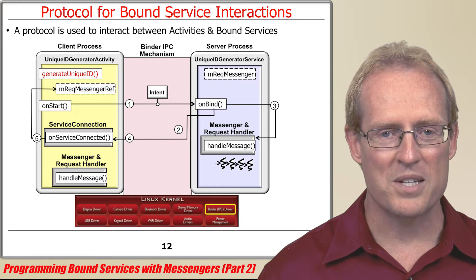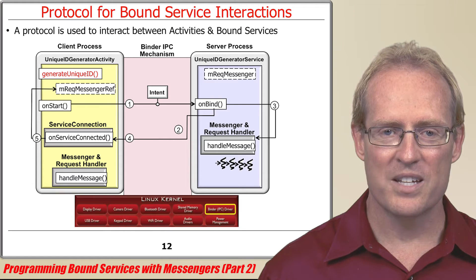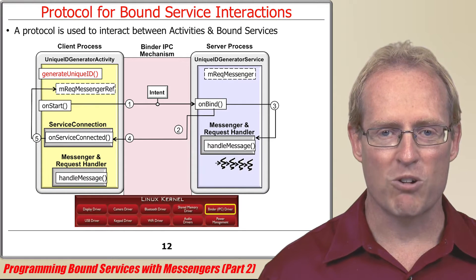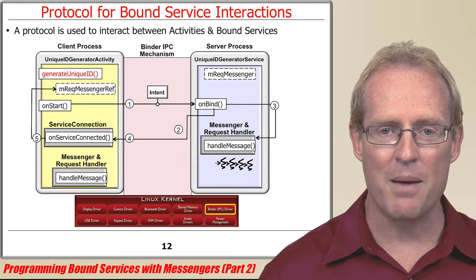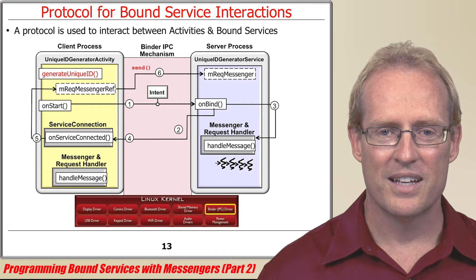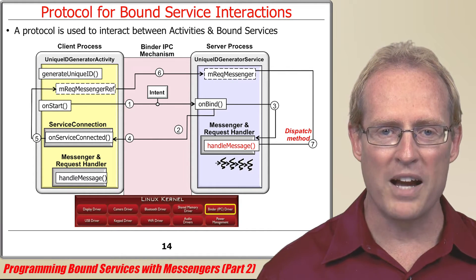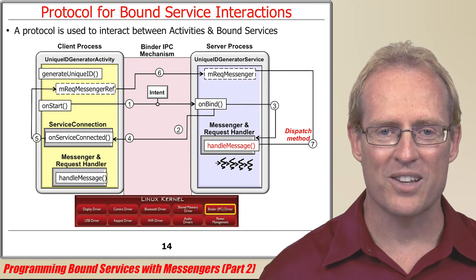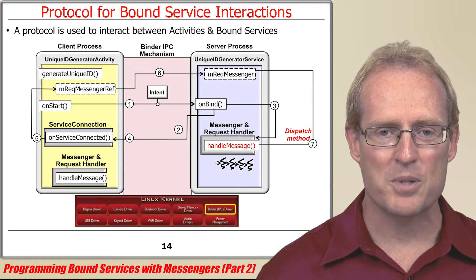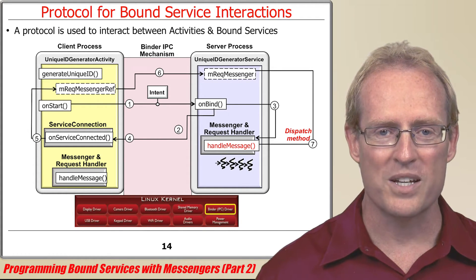When a user presses the get unique ID button, the corresponding get unique ID method is dispatched, which creates a request message containing a reply messenger and calls the request messenger's send method to pass the message to the unique ID generator service. The message passed to send is forwarded by the Android binder and handler frameworks to the handleMessage hook method of the request handler, which creates a runnable that encapsulates the request message and enqueues the runnable into a thread pool executor.